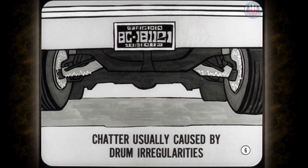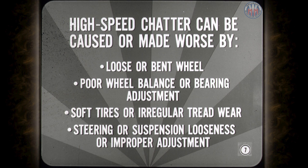Chatter is usually caused by brake drum surface irregularities, especially in the front brakes. A drum surface may be wavy, oval, out of round, or spotted by overheating. In addition to brake drum condition, high-speed chatter can also be caused or made worse by a loose or bent wheel, poor wheel balance, or bearing adjustment, soft tires or irregular tread wear, or steering or suspension looseness or improper adjustment.